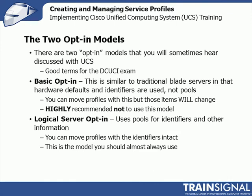You'll see two opt-in models referred to, especially if you're going to be on the DCUCI exam. There's the basic opt-in model, similar to traditional blade servers where you use everything off the hardware — hardware defaults, settings, identifiers. You can move a profile between blades, but all those items are going to change. We talked in the pools lesson about MAC pools, WWNN and WWPN pools, and UUID pools. The basic opt-in model doesn't use those — it uses what's on the hardware. So if you disassociate a service profile and associate it to another blade, all that stuff changes and you'll have problems. The alternative is logical server opt-in, which uses those pools for all your identifiers and settings. If you pick up a service profile and move it to a new blade, all those identifiers go with it — and that's what you want to use.